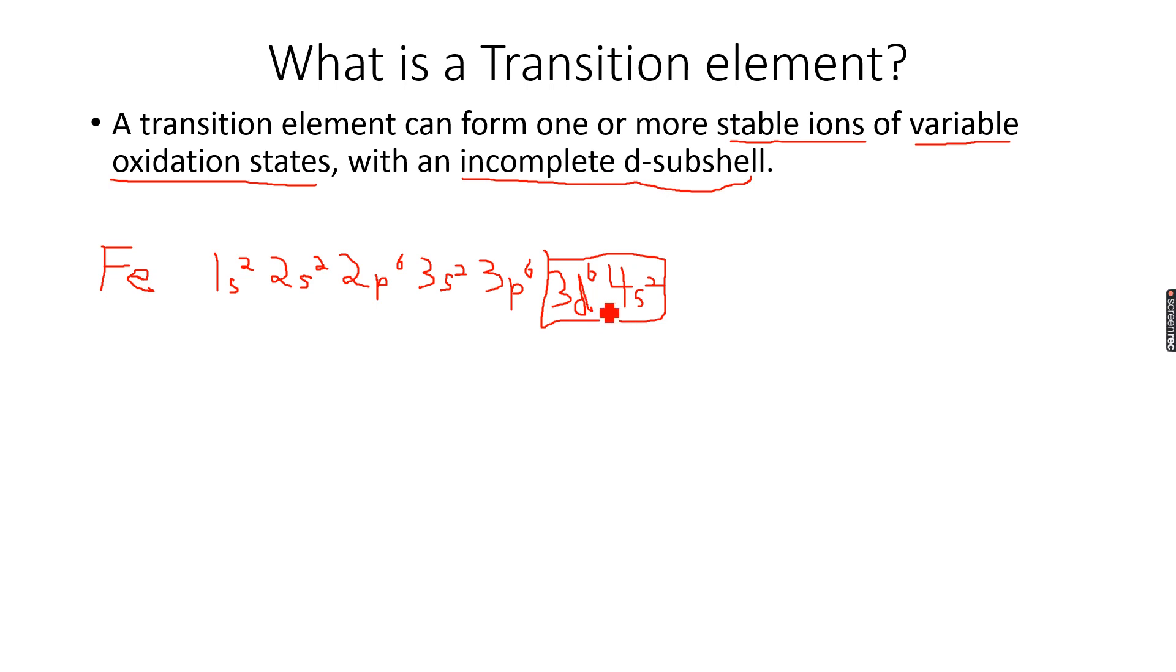If I have to make these orbitals, the 3D and 4S orbitals, we have 5 orbitals in a D subshell and 1 orbital in an S subshell. I have 2 electrons here. These arrows show the opposite spins. If you've studied Pauli's exclusion principle in your AS levels, 1 orbital can only occupy 2 electrons, and both of these electrons have opposite spins.